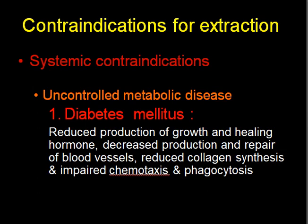Why should one avoid extraction in an uncontrolled diabetic patient? Why is there delayed healing and more chances of infection? It is because of reduced production of growth and healing hormones, decreased production and repair of blood vessels, reduced collagen synthesis, and impaired chemotaxis and phagocytosis — all of which lead to delayed healing and more chances of infection. That is why we should avoid extraction in a patient with diabetes mellitus with uncontrolled sugar levels.